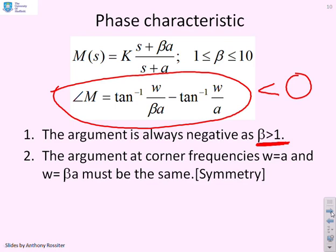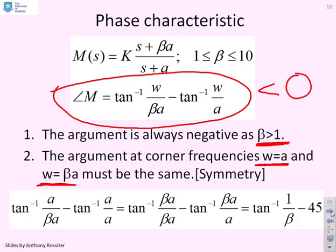Now, the other thing you will notice is that you'll get a symmetry argument. That is, the phase at omega equals a is the same as the phase at beta a. And those are the two corner frequencies. So in other words, you get the same phase at the two corner frequencies. So you get a sort of symmetry. And here's the proof if you want it. There's the phase at the first corner frequency. There's the phase at the second corner frequency. And if you pause the video and copy those down, it'll be very easy to prove that both of those will give you this. Tan to the minus 1 of 1 over beta minus 45. So the phase plot is symmetric and you have the same phase at the corner frequencies.